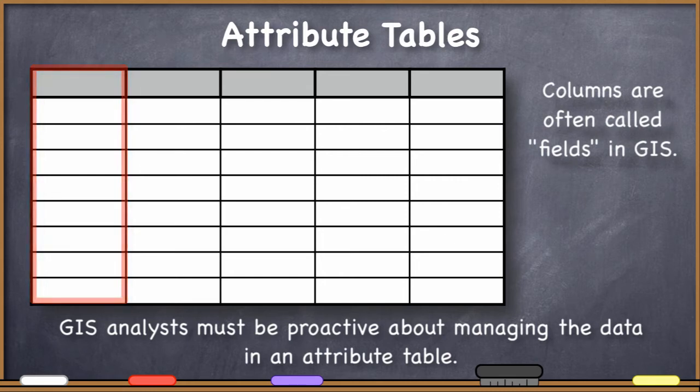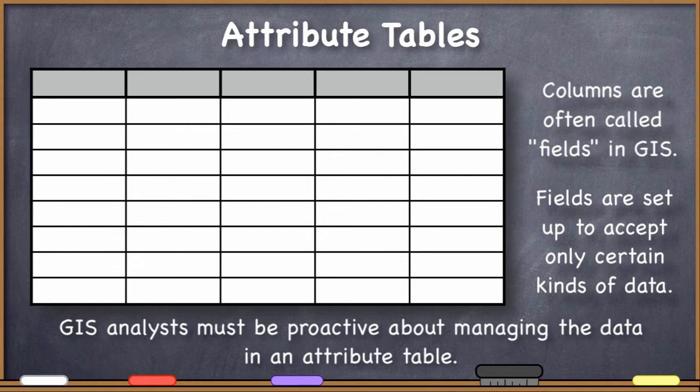That's why everyone in GIS runs into the problem at some point where they want to enter some data into a cell in an attribute table, but the table won't accept the input. And that's because you're trying to enter some data into a cell in the attribute table that the field was not set up to accept.